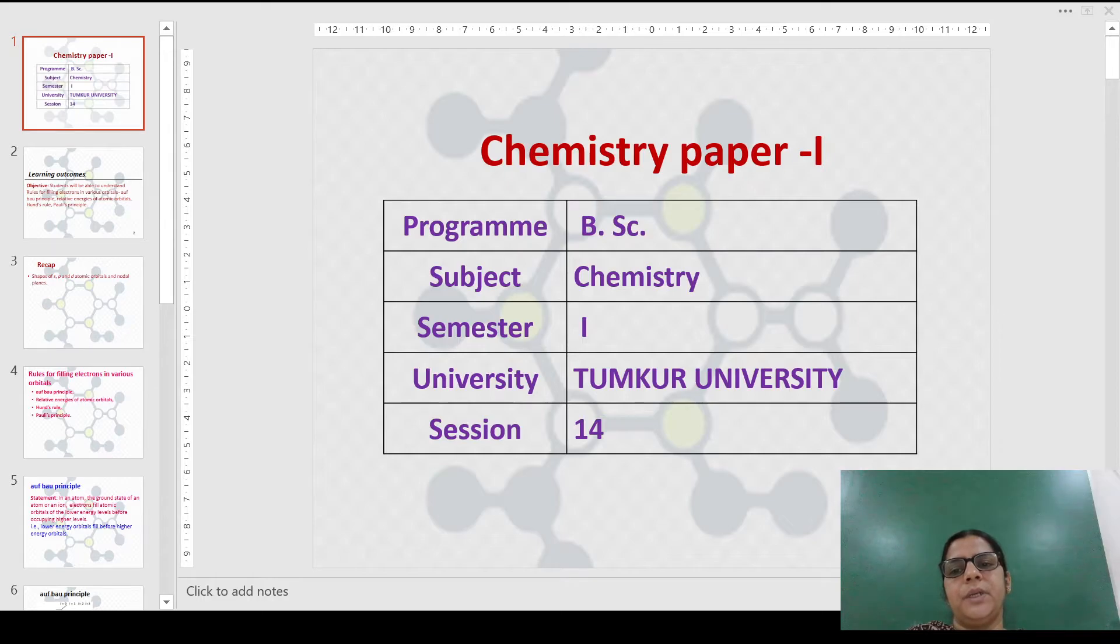The 1S orbitals will have the lowest energy, so the electrons are fit in this first. Then the 2S, then we go on to the 2P, 3S. From here, we will come on to this 3P, 4S. Likewise, as the arrows move in that direction, we have to follow and fill the orbitals. 1S can take up two electrons, 2S also will take up two electrons, then 2P takes up six electrons. Likewise, we have to go on filling the electrons in these orbitals.